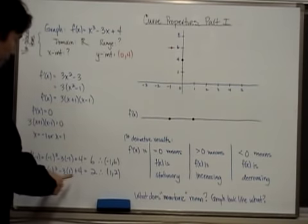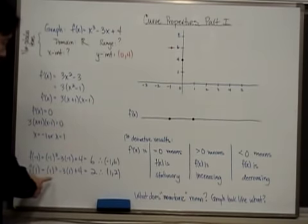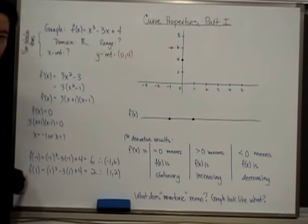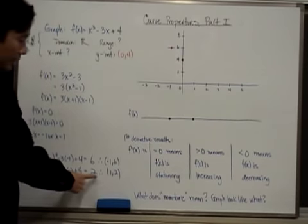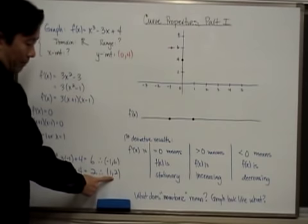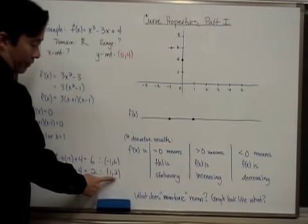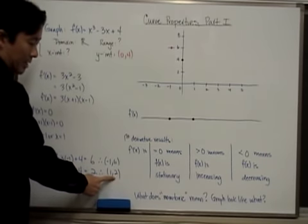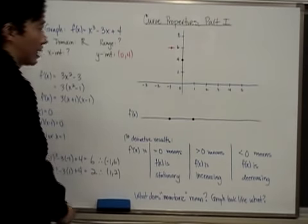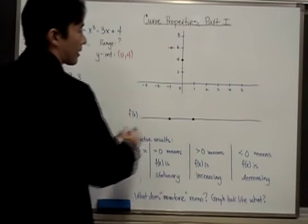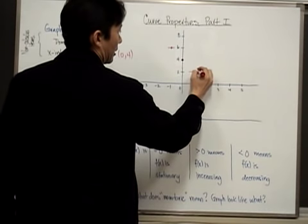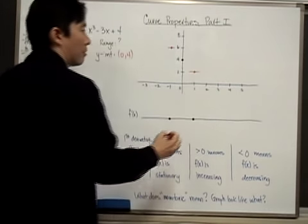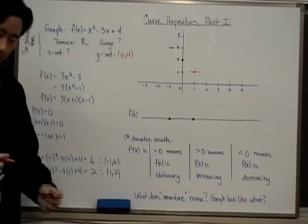Now let's also take a look at what happens when I substitute 1 in for the function f. I come up with the value of 2. Therefore, I also know that the function is going to be stationary at the point (1, 2). In other words, the function is going to have a horizontal tangent at that point.